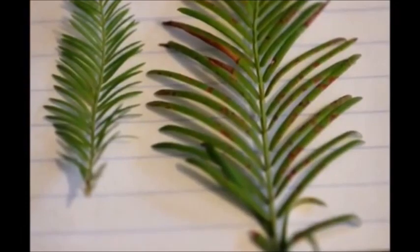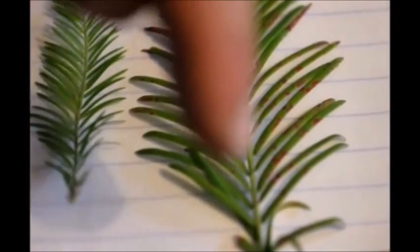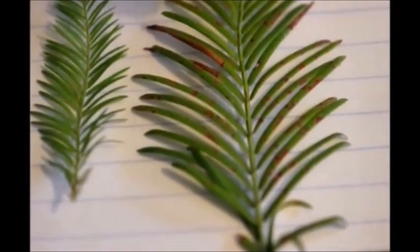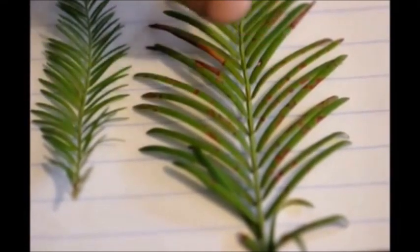On the dawn redwood, it has the same leaflet onto the midrib going down, but they're arranged opposite of each other.